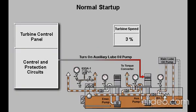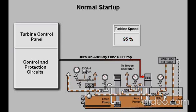While the turbine is starting, the shaft-driven main lube oil pump is at a speed insufficient to develop operating pressure. As long as AC power is available, the auxiliary pump supplies oil throughout the lube oil system until the turbine reaches approximately 95% speed. At this point, the control system shuts off the auxiliary lube oil pump and lube oil pressure is maintained by the main lube oil pump.